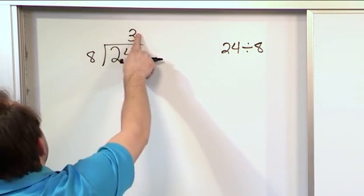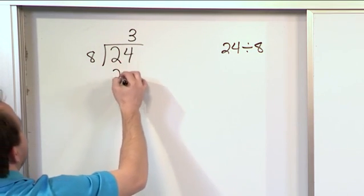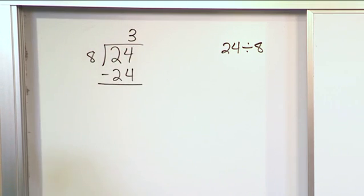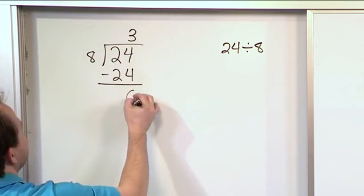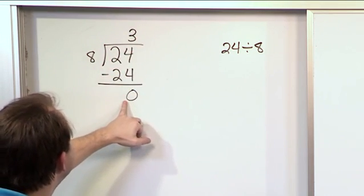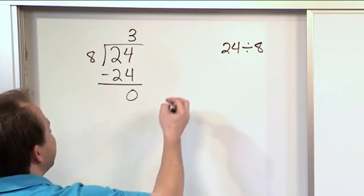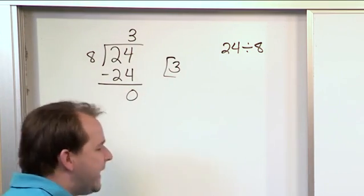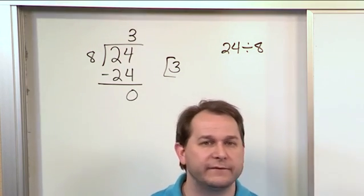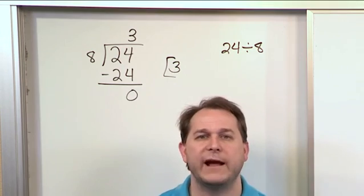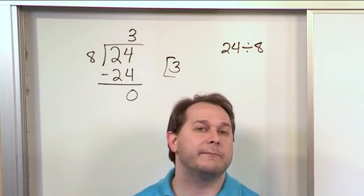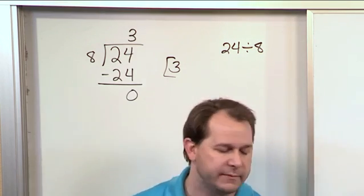Then what you do is multiply 3 times 8, and you write the answer that you get down below, which is 24. Then you subtract these from one another. 24 minus 24 is 0. Because you figured out that it went 3 times and because there's nothing left over, the answer that you write down is just 3. There's nothing else to write. 8 can go into 24 exactly 3 times. There's no remainder. If we were to get something other than 0 here at the end of the problem, then we would have a remainder, something left over.